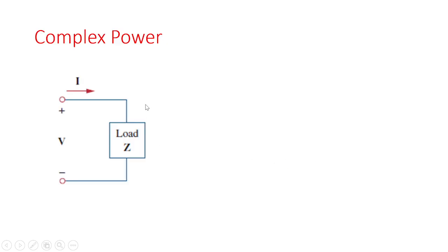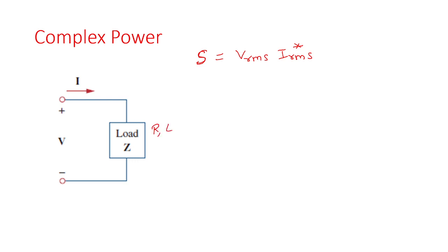We will start with the complex power. The complex power is nothing but the product of VRMS and IRMS, denoted by bold S, which is VRMS times IRMS conjugate. In the DC circuit, power is just the product of voltage and current because the network is purely resistive. But here the network may consist of inductors and capacitors as well — it may be RL, RC, or RLC — so the power will be complex.